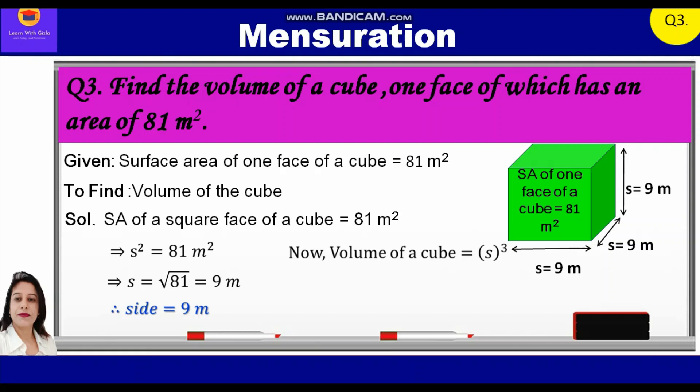Now further, the volume of the cube is equal to S³ = 9³ = 729 m³. So the volume of this cube is equal to 729 m³.